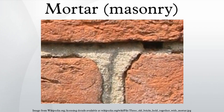Mortar comes from Latin mortaria meaning crushed. Cement mortar becomes hard when it cures, resulting in a rigid aggregate structure. However, the mortar is intended to be weaker than the building blocks and the sacrificial element in the masonry, because the mortar is easier and less expensive to repair than the building blocks.